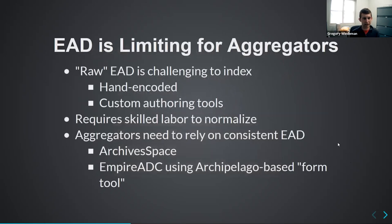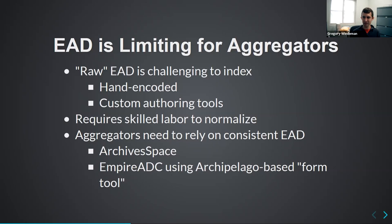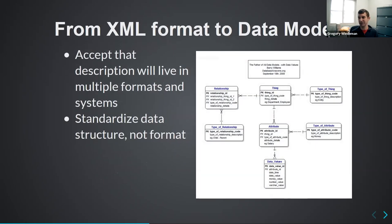This is why EAD is kind of limiting for aggregators. Raw EAD that's either hand-encoded or using a local authoring tool can be really challenging to index because it requires skilled labor to make it consistent, and a lot of consortium-based aggregators don't have that extra skilled labor. Aggregators push people towards consistent EAD from tools like ArchivesSpace, which is great, but not all repositories are a good fit for ArchivesSpace, particularly smaller repositories that might not get many of the advantages. What I think we need to do is move from our XML format to a data model instead — accept that our description is going to live in multiple formats and systems over time, and focus on standardizing the structure of our data, not necessarily the format.